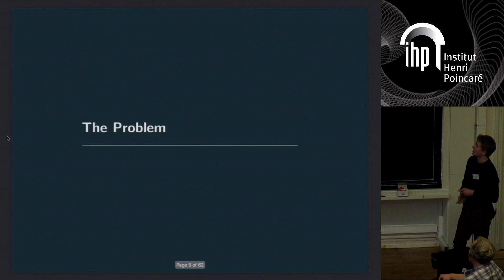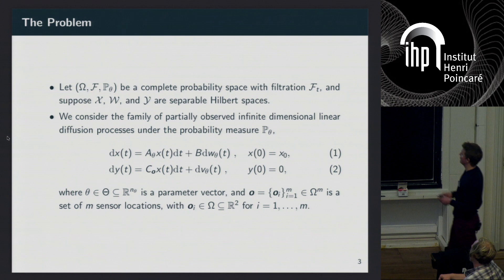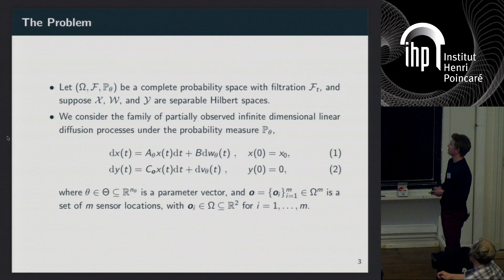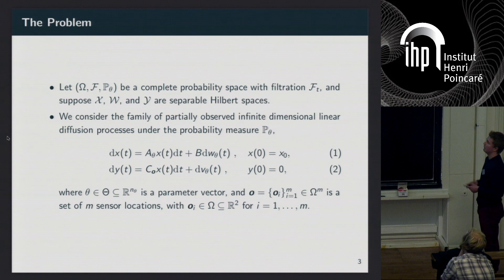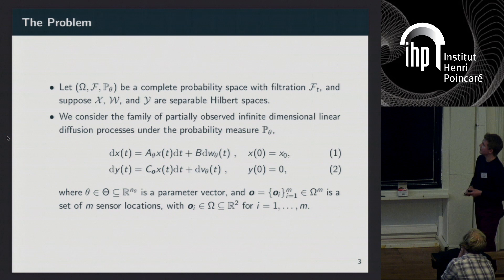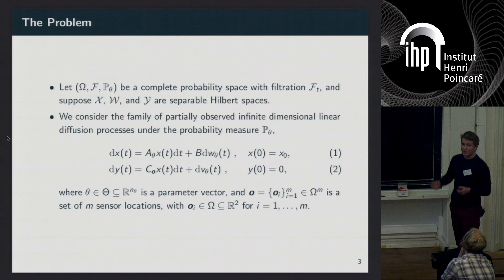The problem setup and notation: my assumptions are fairly restrictive. I am looking at a class of linear diffusion processes — this is essentially the continuous time version of a lot of the partially observed models we've seen already. The signal of interest X evolves according to some evolution operator which depends on some potentially unknown parameters theta, with a noise term which is just a Wiener process.